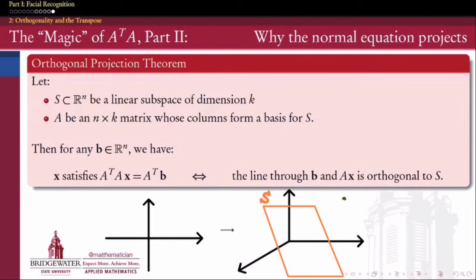Alright, so here's the big theorem that defines for us the magic of the matrix A transpose A. The theorem says that if I have a linear subspace of R^n, let's call it S, and if it's k-dimensional, and if we have a matrix A whose column space is equal to S, so let's think of A as having columns that actually form a basis for S. In this picture here, I've drawn S as though it's a two-dimensional subspace of R^3, so it's a plane going through the origin in R^3. If I pick two linearly independent vectors in S, then those two are going to span all of S, and because they're linearly independent, they therefore form a basis for S.